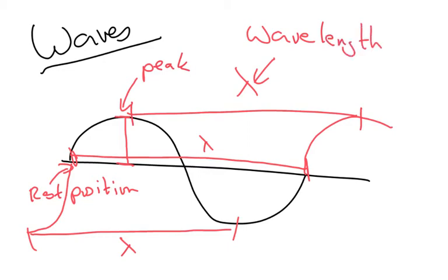Now wavelength is a length, so it's in meters. Likewise, the amplitude as well—the amplitude is also in meters. This here is called the trough.